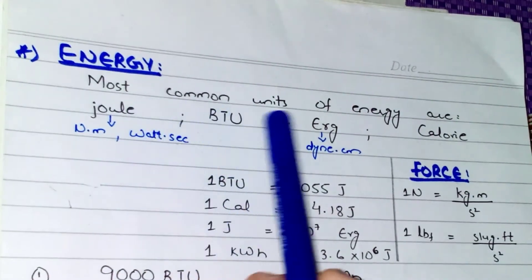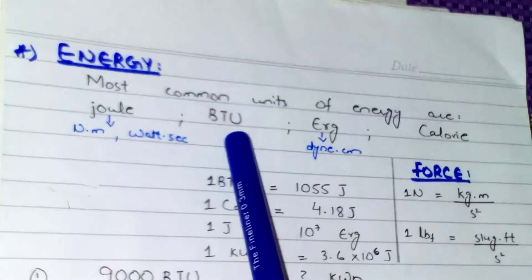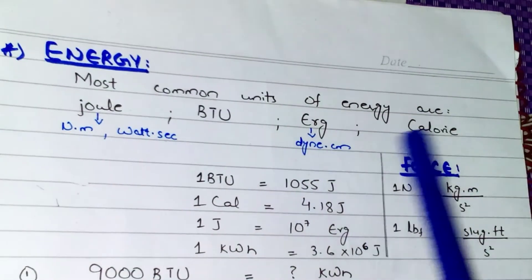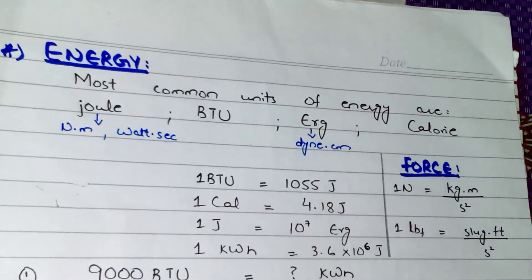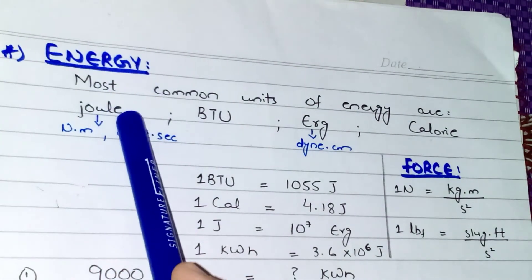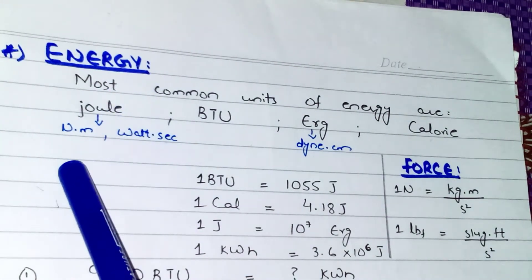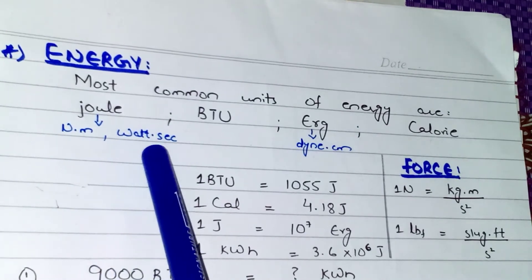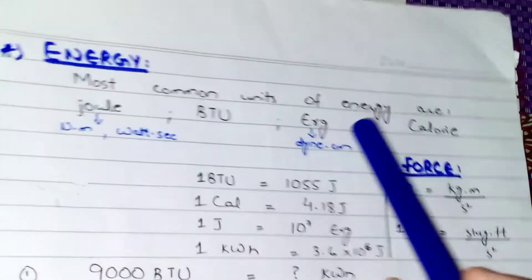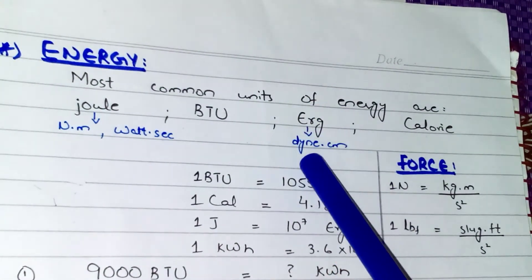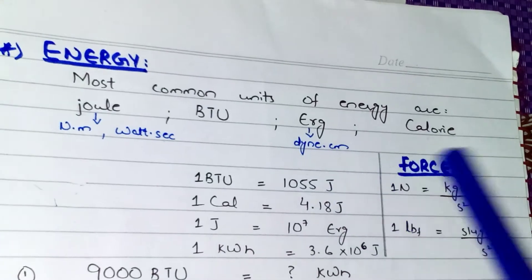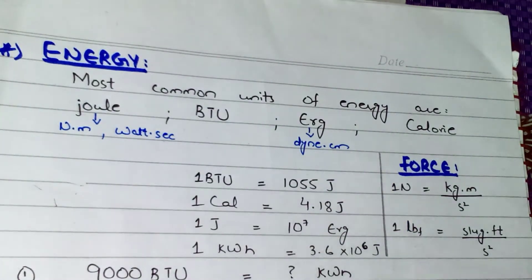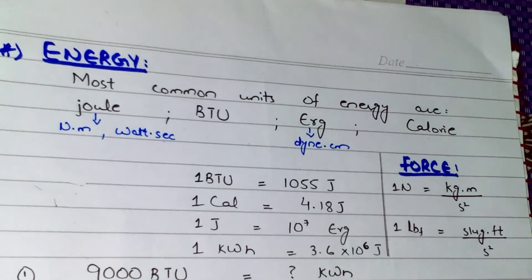Firstly, we have energy. The most common units of energy are joule, BTU (that is British Thermal Unit), erg, and calorie. There are other units of energy as well, but these are the most common ones. Whenever we talk about joule, it is the product of newton·meter, or we can say watt·second. And whenever we talk about erg, it is the product of dyne·centimeter.